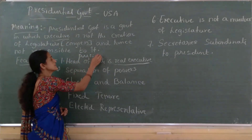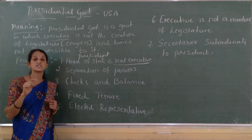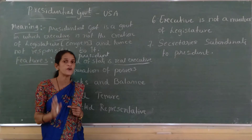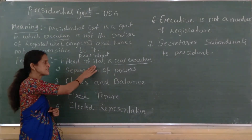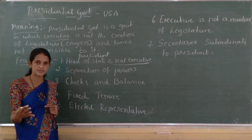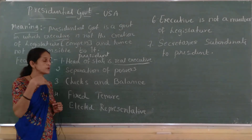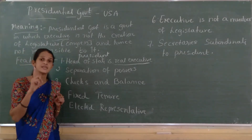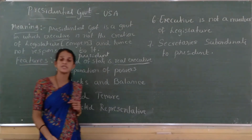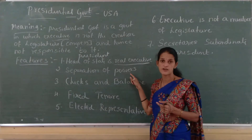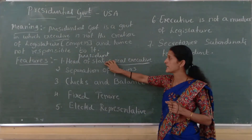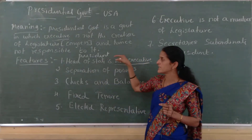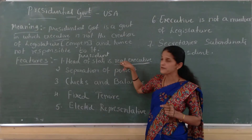The president acts as the real executive in the presidential form of government. He represents the nation and acts as head of state, head of government, and the real executive. All real powers are vested in the hands of the president in the United States of America. All administrative powers are vested in the hands of the president. There is no prime minister post in the United States of America.